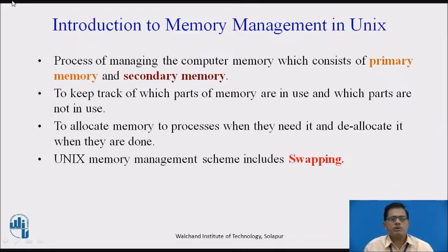Memory is an important resource in a computer. Memory management is the process of managing computer memory, which consists of primary memory and secondary memory. The goal for primary memory management is to keep track of which parts of memory are in use and which are not, to allocate memory to processes when they need it and de-allocate it when they are done. The Unix memory management scheme includes swapping processes.